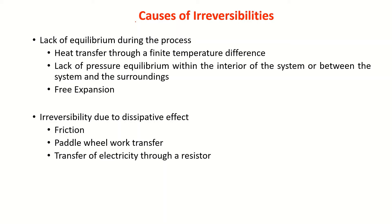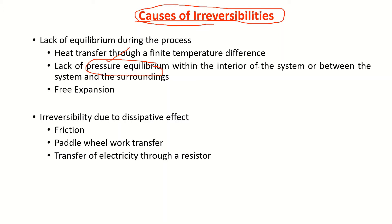Now, why does it take more work or reject more heat? What are the causes of irreversibility? First, lack of equilibrium during the process — carrying out heat transfer through a finite temperature difference makes it very difficult to maintain thermal equilibrium. Lack of pressure equilibrium, that is mechanical equilibrium, is another issue within the interior of the system and between the system and surroundings. Free expansion is another example. Some examples of irreversibility are friction present in the system, heat transfer through a resistor, and transfer of electricity through a resistor.